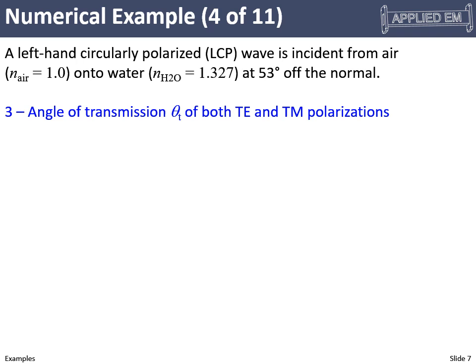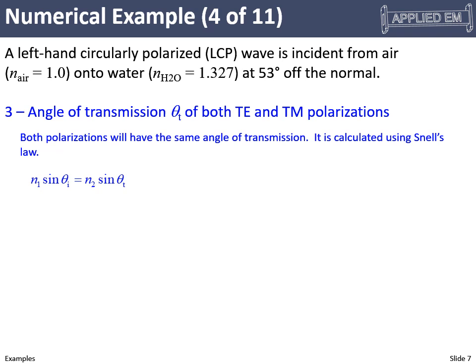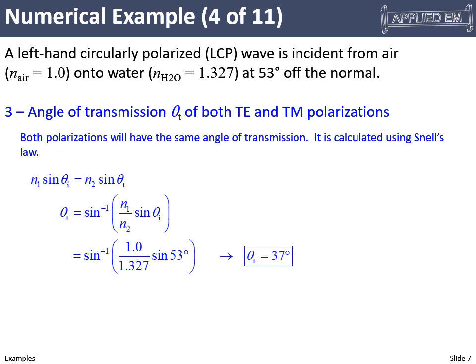Part three: the angle of transmission for both polarizations. This is independent of polarization, so we only need a single angle. Applying Snell's law — N₁ sin θ₁ = N₂ sin θ₂ — and solving for the transmission angle θ_t, we plug in N₁ = 1, N₂ = 1.33, and the angle of incidence of 53 degrees. Doing the math, the angle of transmission is 37 degrees. The angle in the transmitted medium is less than the angle of incidence because the refractive index is higher in the second medium.